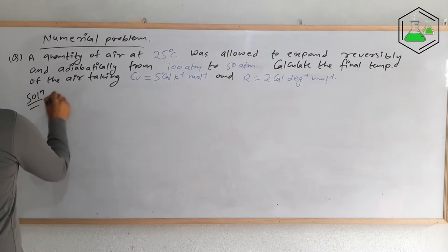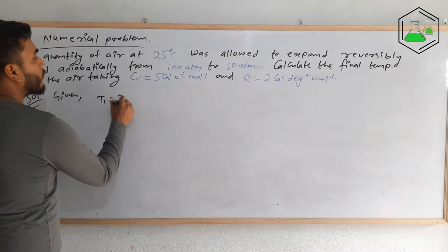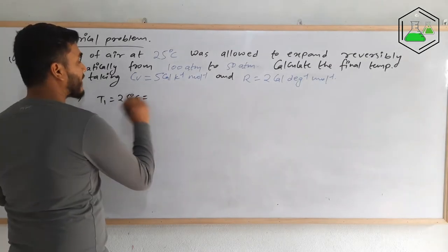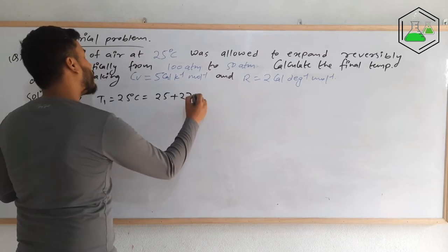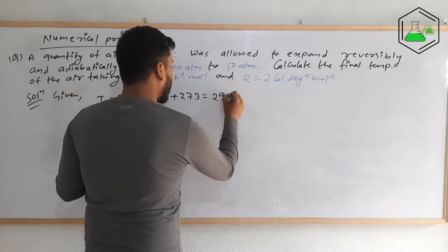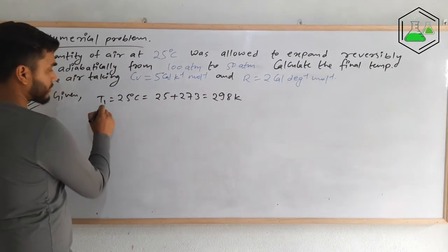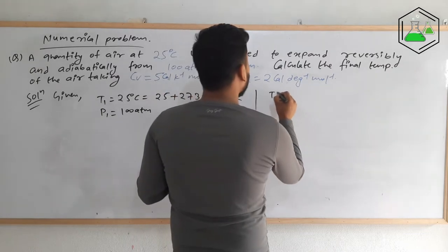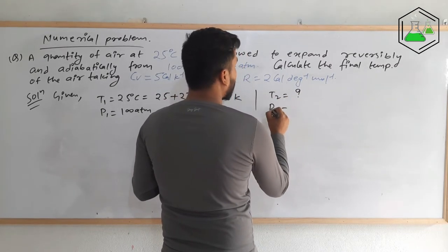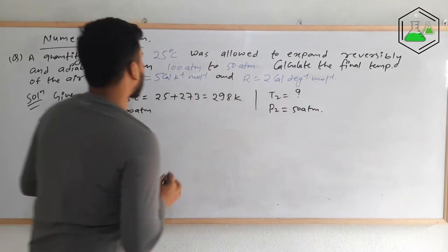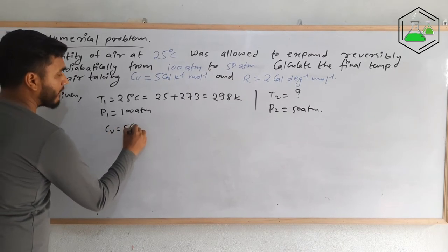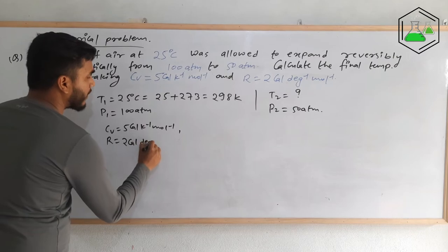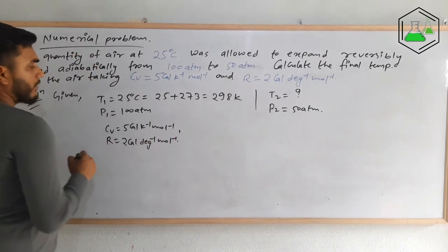Let us solve this numerical problem. The given values are: T1 = 25°C. Always remember, we need to convert to SI units — the SI unit of temperature is Kelvin, so we add 273 to get T1 = 298 K. P1 is given as 180 atm. T2 is what we need to calculate. P2 = 50 atm. Cv = 5 cal/K/mol and R = 2 cal/degree/mol.